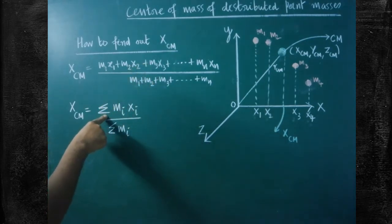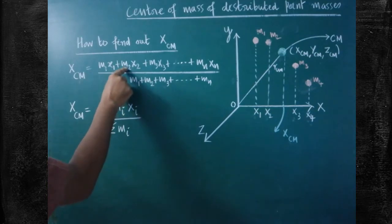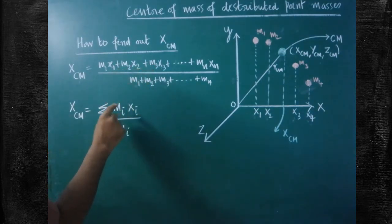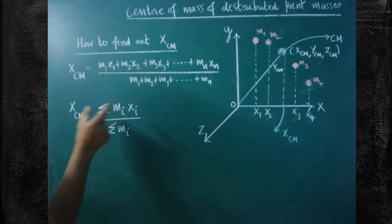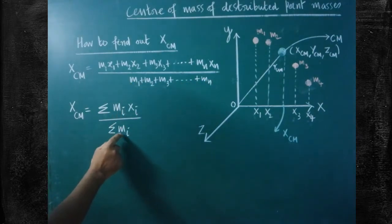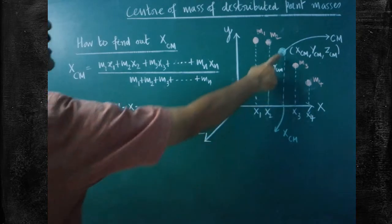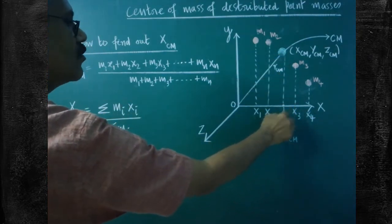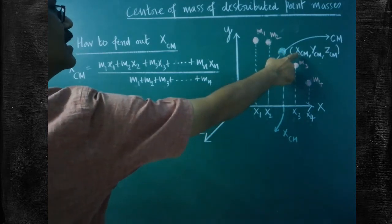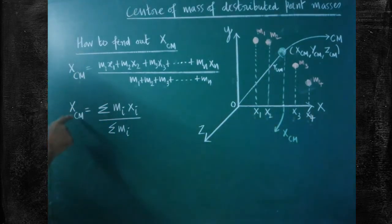This can be written in compact form using sigma notation. XCM equals the summation of Mi times Xi, divided by the summation of Mi. Here, sigma means summation — substituting i as 1, 2, 3, and so on gives all the product terms. Sigma Mi means the sum of all masses. This formula gives the value of XCM, which is the X coordinate of the center of mass.